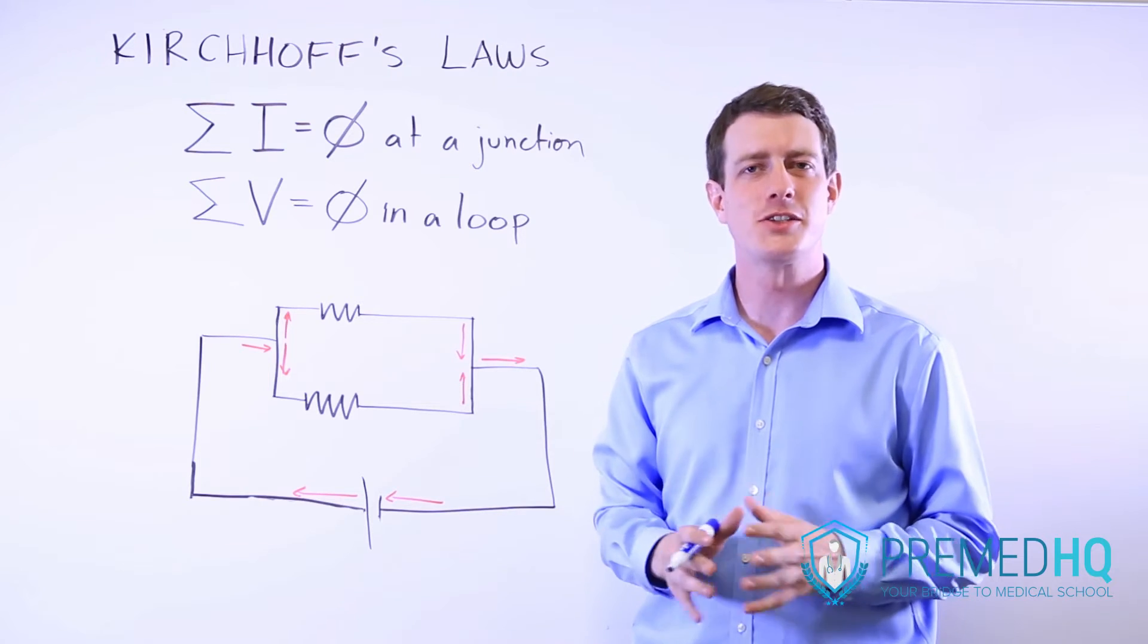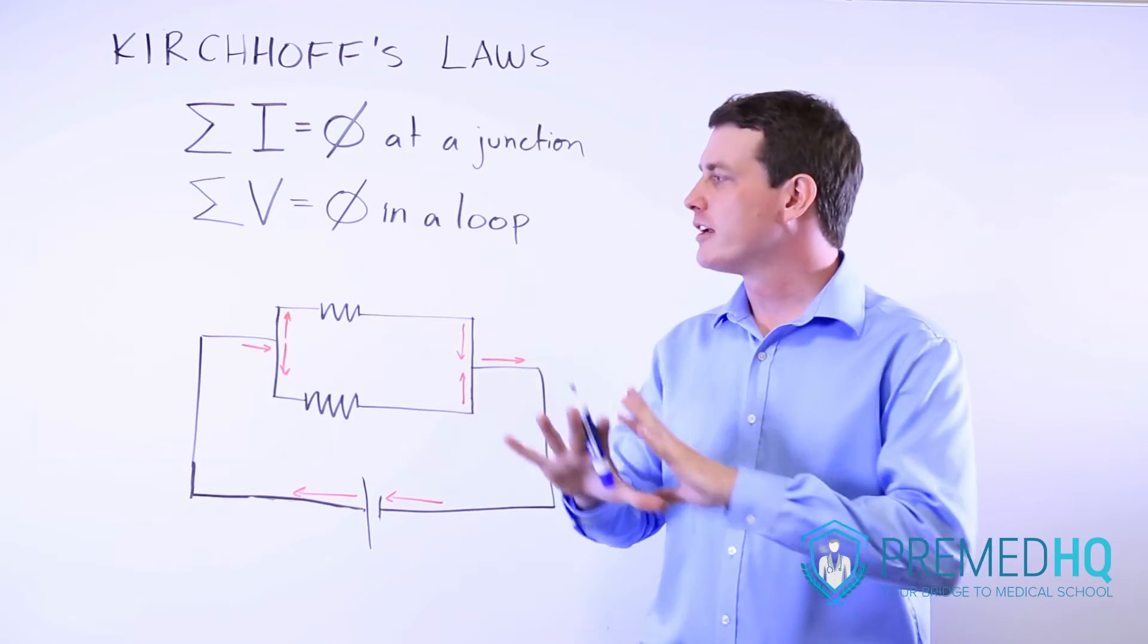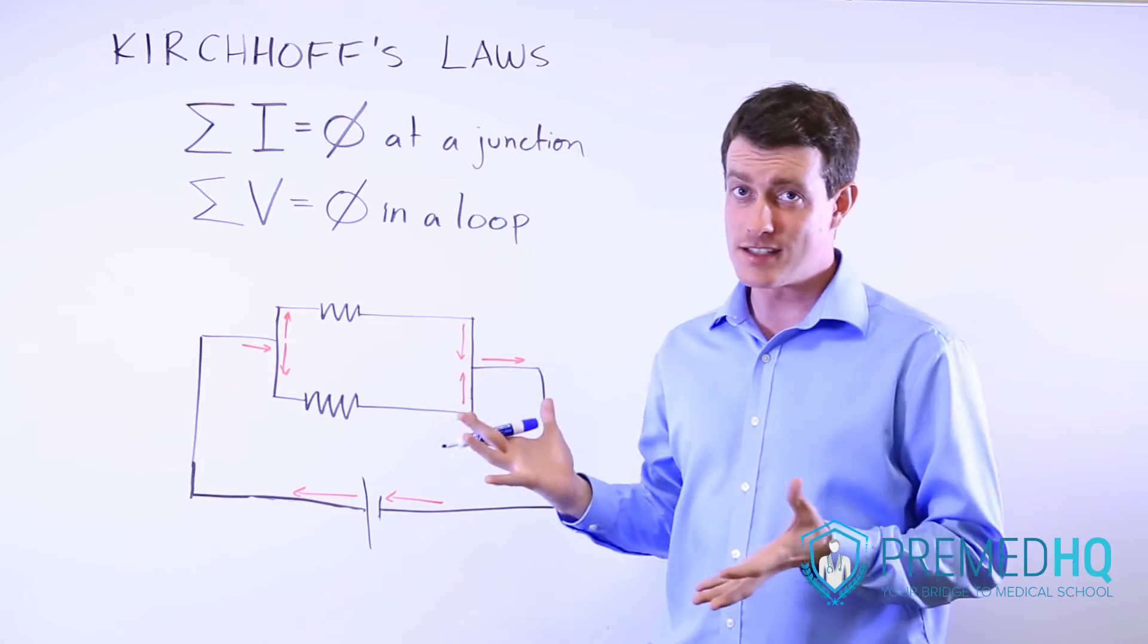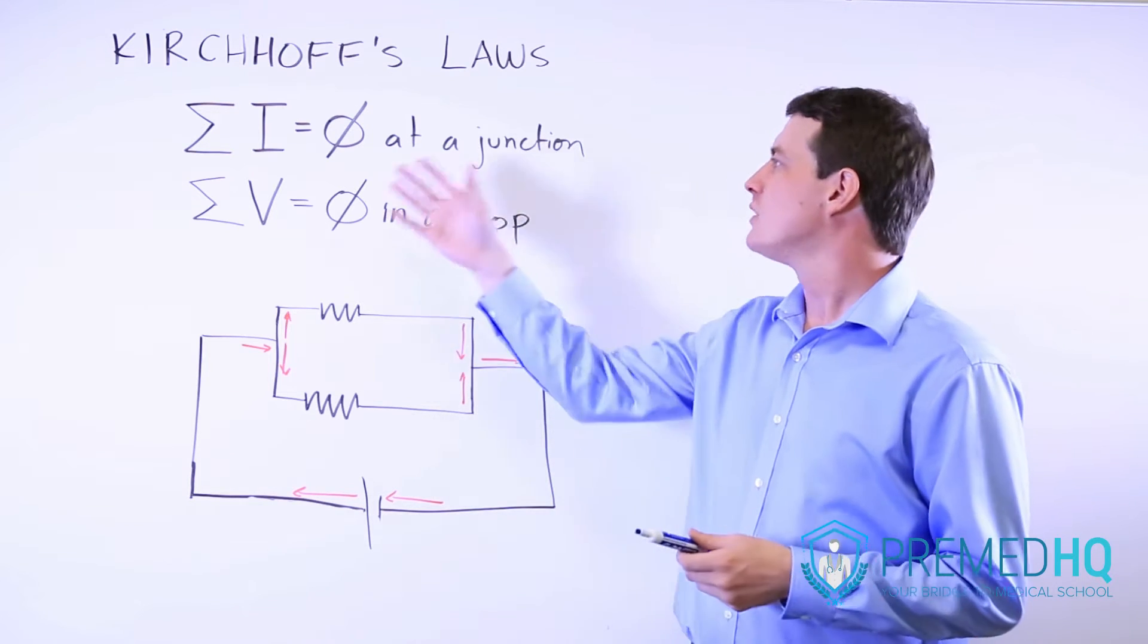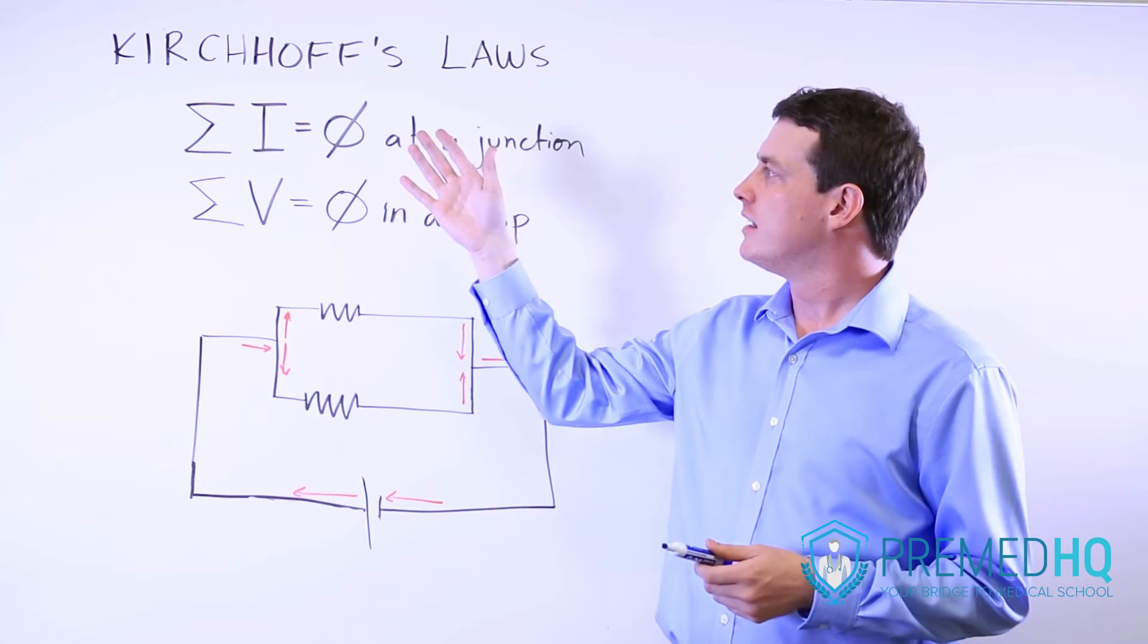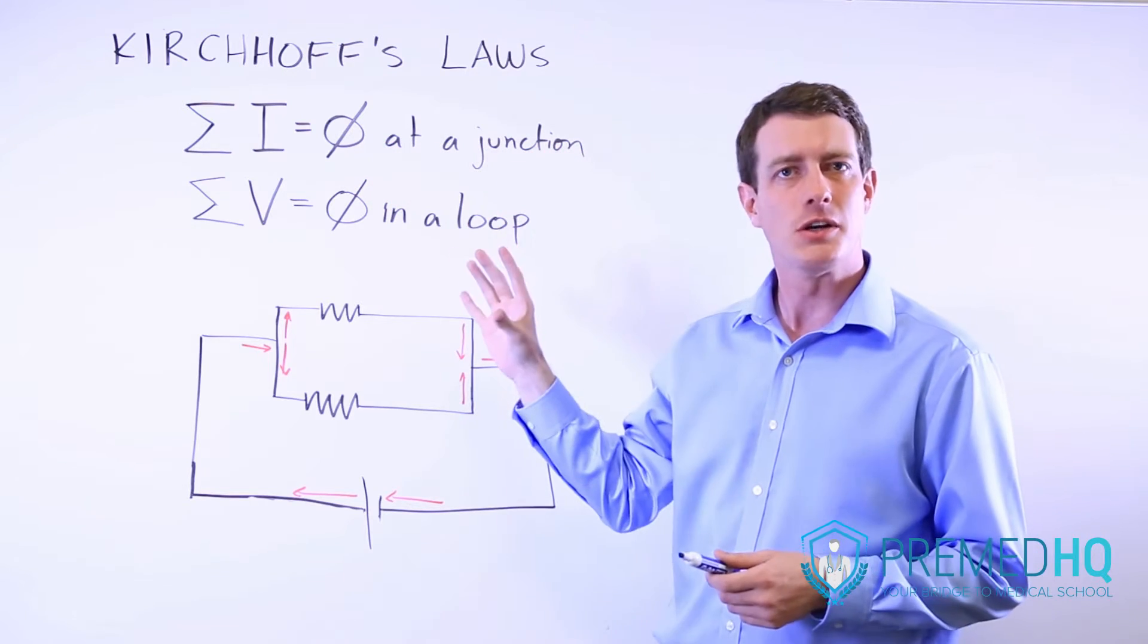Gustav Kirchhoff was a physicist who developed two laws that greatly simplified the analysis of any circuit. The two laws that he had were that the sum of currents at any junction adds up to zero.